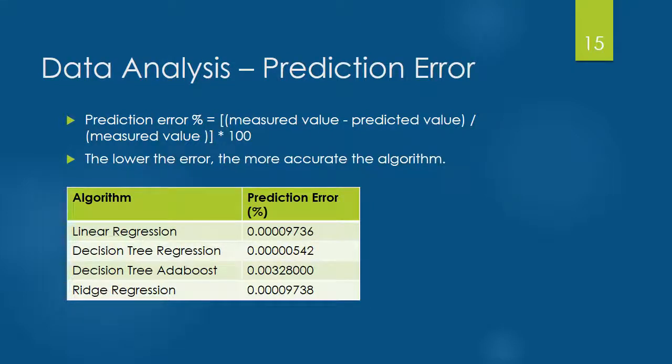In addition to the goodness of fit, it's important to calculate the prediction error of the selected models. Prediction error percent is measured value minus predicted value divided by the measured value and then multiplied by 100. The lower errors mean the algorithm is more accurate.